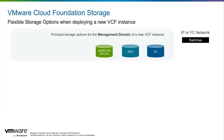Cloud Foundation defines two categories of storage. The first is principal storage, which is the storage type selected when creating a new domain. During the initial deployment of a new Cloud Foundation instance, the management domain is configured using one of three storage types. vSAN HCI is the recommended and preferred option for the management domain, but alternatively NFS, VMFS, and Fiber Channel are also supported. When additional workload domains or clusters are created, the customer is given several additional storage options to choose from.